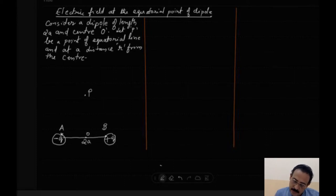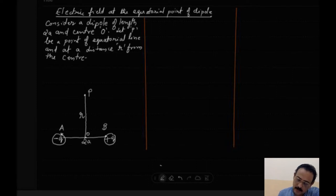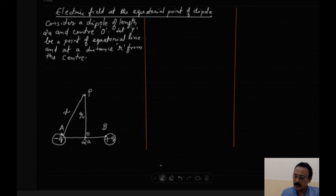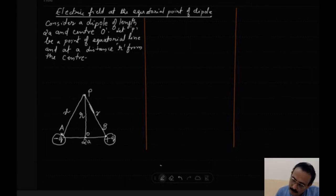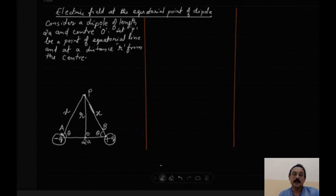This is along the equatorial line, and point P is at a distance r from the center O. The distance from A to P is x and from B to P is also x. Let the angle formed here be theta, and the angle formed on the other side also be theta.